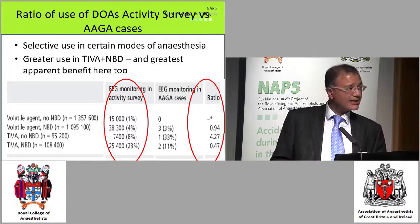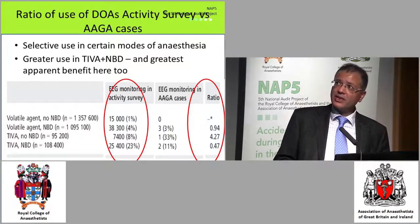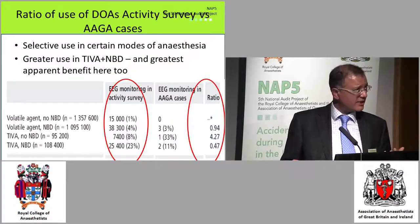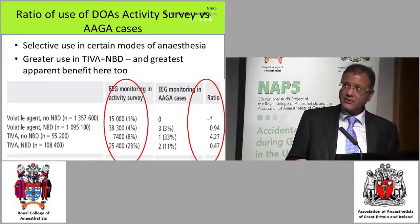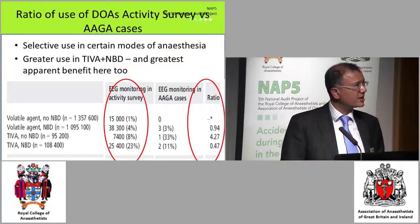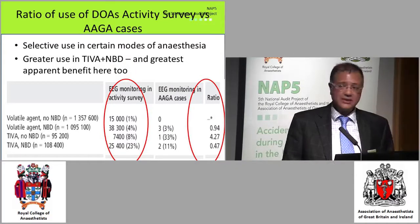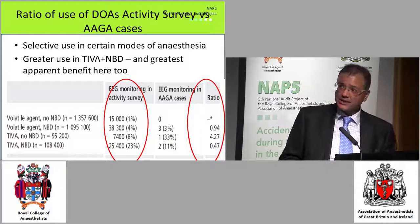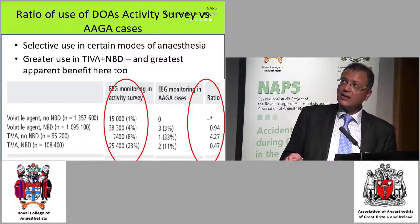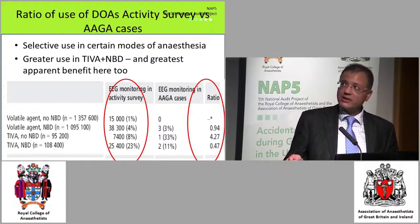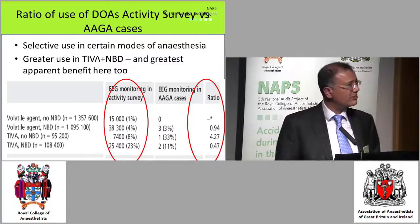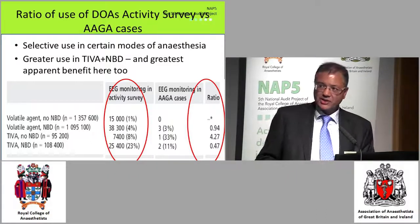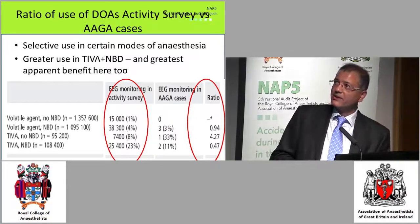The conclusions of this analysis are: first, anaesthetists are selectively — naturally, without any specific advice — using monitoring for certain modes of anaesthesia, namely TIVA with neuromuscular blockade. And secondly, that is the subgroup in which there appears to be the greatest apparent benefit of these monitors. So a large number of anaesthetists naturally seem to be doing the right thing.